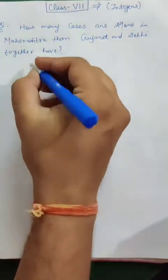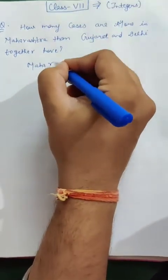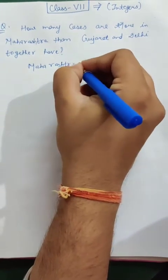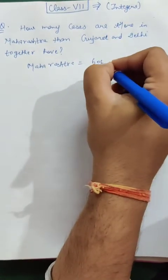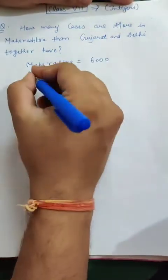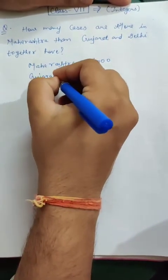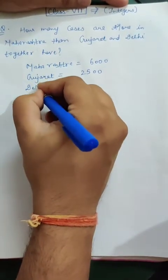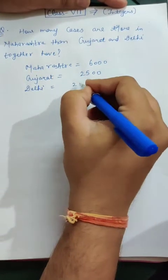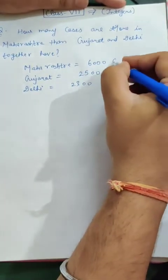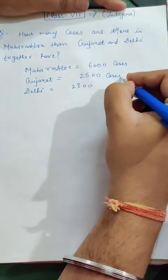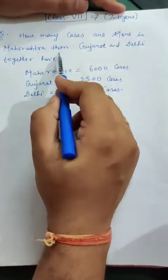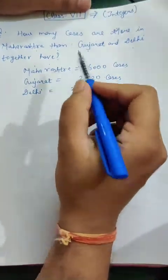So we need to find how many cases are more in Maharashtra than Gujarat and Delhi together have. Maharashtra total cases: 6,000. Gujarat: 2,500. Delhi: 2,300.